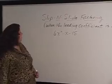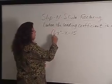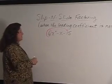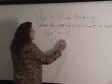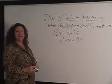In this case, our leading coefficient is 6. So we're going to manipulate this problem by multiplying the leading coefficient by the constant. So we're going to have x squared minus x minus 90 because 6 times 15 is 90.